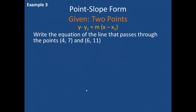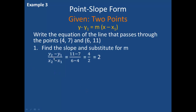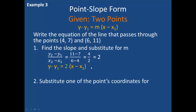In this third example I am not given the slope of the line. Instead I am given two points, and I can still use the point-slope form. My first step is to find the slope using y2 minus y1 over x2 minus x1. I substitute 11 for y2, 7 for y1, 6 for x2, and 4 for x1. This gives me a slope of 4 over 2, which simplifies to 2. So I now have y minus y1 equals 2 times x minus x1. My second step is to substitute one of the points' coordinates for x1 and y1, giving me y minus 7 equals 2 times x minus 4.